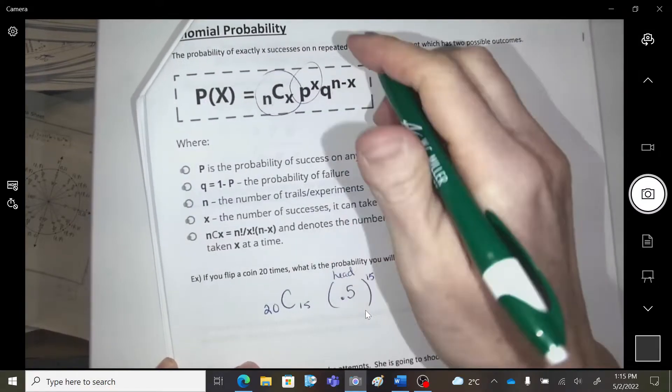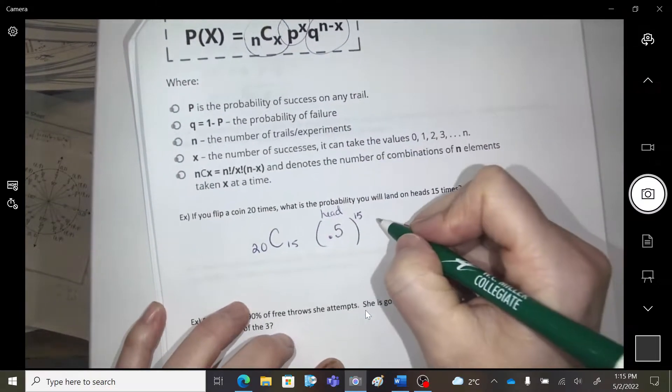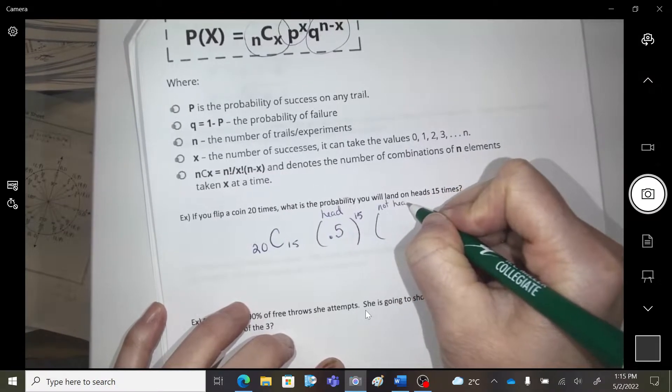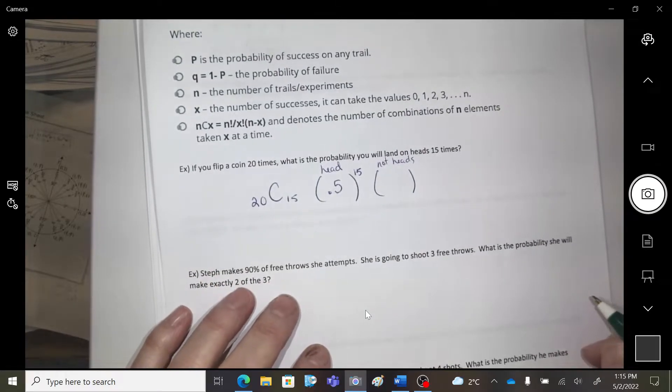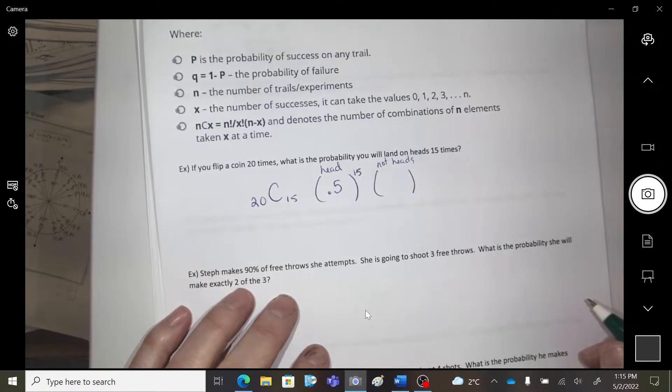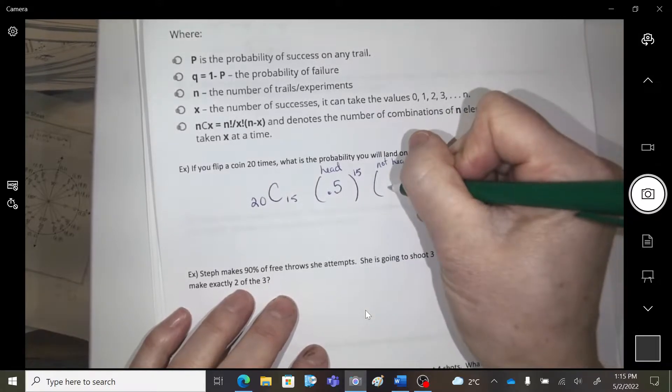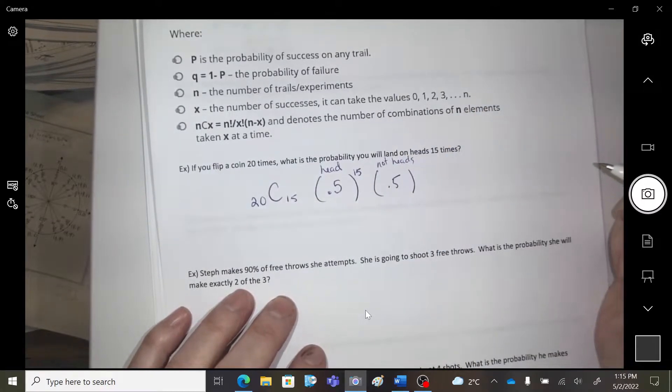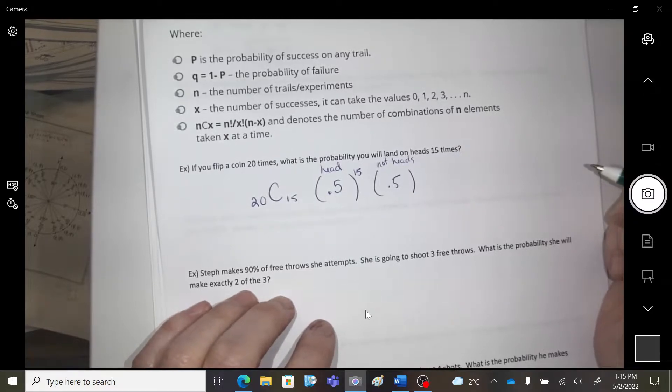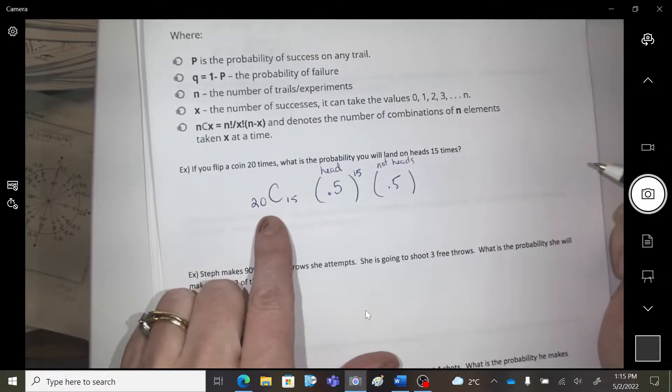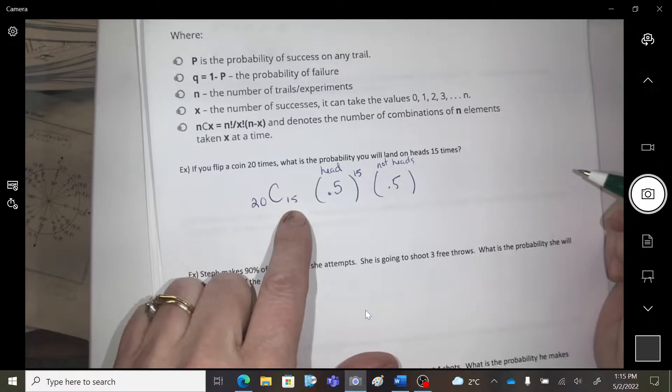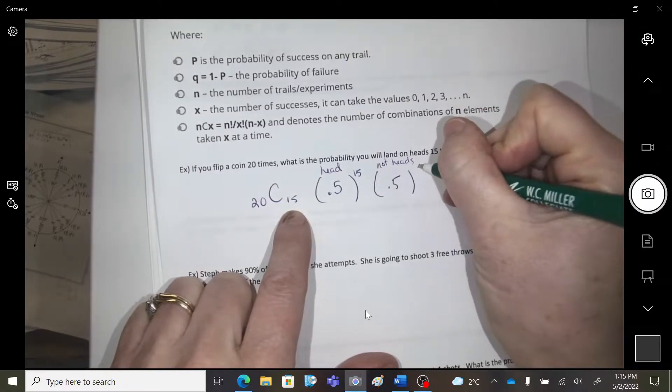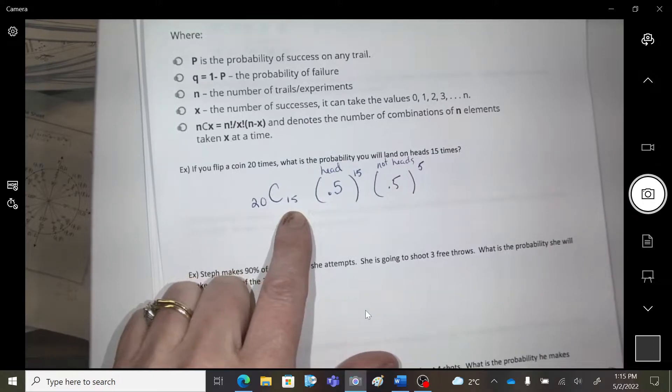Then Q is the probability of not heads. What's the probability of getting not a head on a coin, aka a tail? 0.5, and out of those flips, how many times are we wanting to flip a tail? What do you think here? We had 15 heads, so how many tails are we going to have to flip? 5, right? Because we had 20 flips.